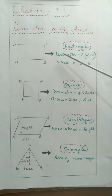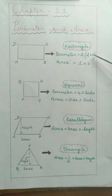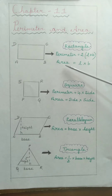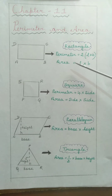Therefore, the perimeter of a rectangle is equal to 2 into (L plus B), where L is the length and B is the breadth. The area of the rectangle is given by L into B. So the formulas are: perimeter of a rectangle equals 2(L + B), and area of a rectangle equals L × B.